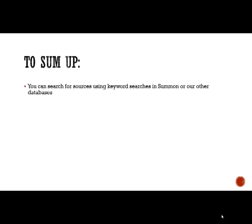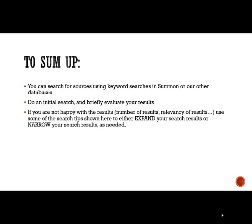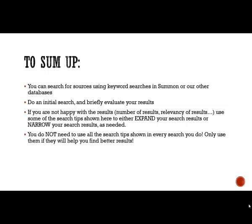To summarize: one way to find sources for your assignments is to search using keywords and phrases in your database of choice. Do an initial search and then briefly evaluate your results — look at what you have, and are there other words or phrases you see that might help you find more sources? If you're not happy with the results, use some of the search tips shown here to improve your search. You don't need to use all of the tips every time — the idea is to give you a toolkit, and only use the tips that will help you find better results.